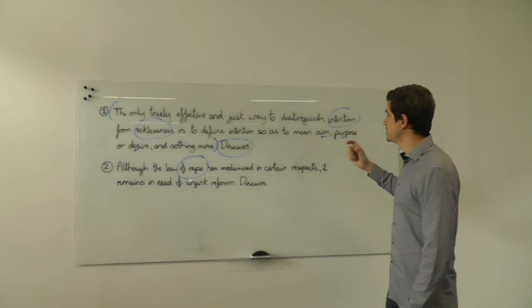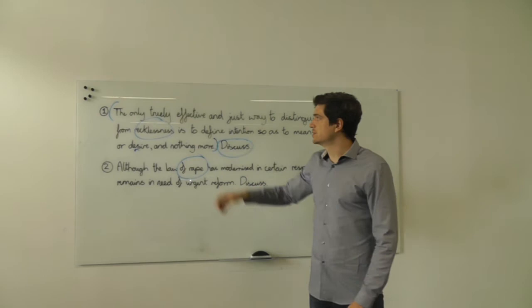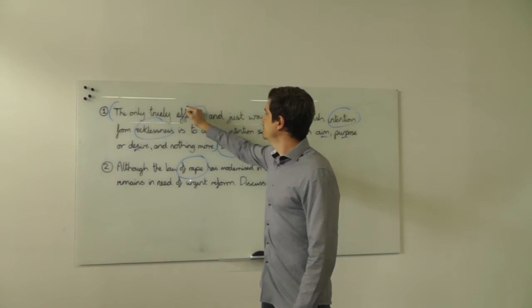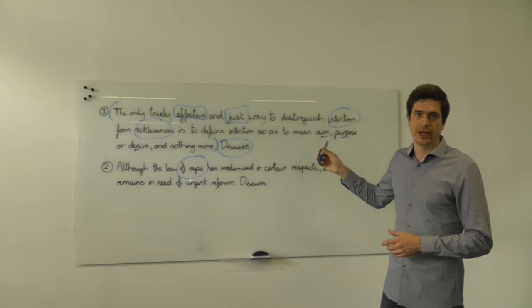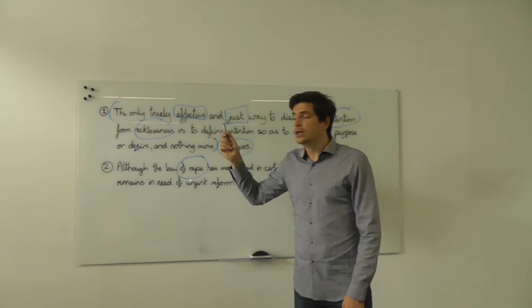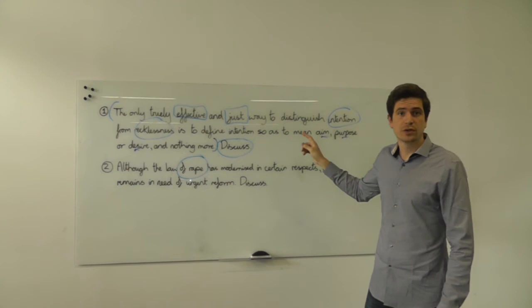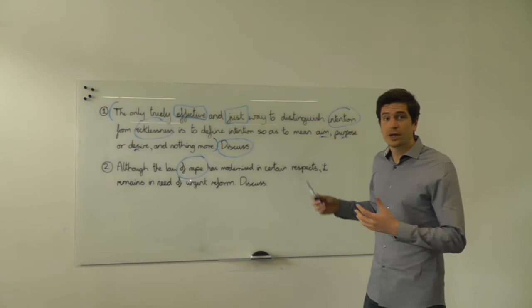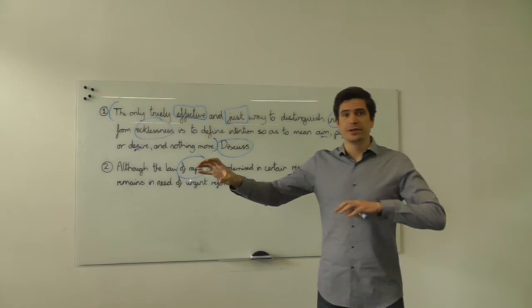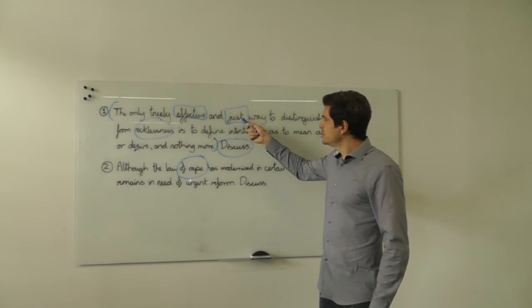The debate here is: why do we need oblique intention? Wouldn't it be simpler to separate intention — defined as direct intention — from recklessness covering everything else? We look back to the question: 'the only truly effective and just way.' Those are our key words to define our debate around. One reasonable way to structure this essay is to look at those two things separately. In terms of what's effective, what's clear and user-friendly, distinguishing in the way the quote says would be good. Oblique intention is very difficult to apply in practice, and there are similarities between oblique intention and recklessness, so a neat separation is very desirable.